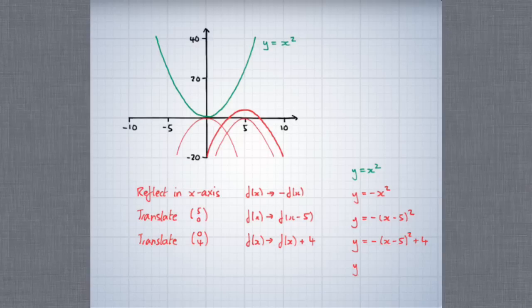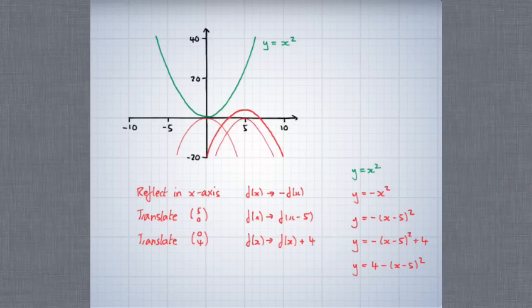We would normally write that in a more elegant way. So we've discovered that an equation of the transformed graph is y equals four take away the square of (x minus five). We found that out by finding some transformations that turn the original graph of y equals x squared into the new graph, understanding those in terms of a general change to a function f, and then applying those changes to the specific function y equals x squared. This is the method for finding the equation of a transformed graph from the equation of the original graph.